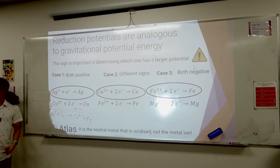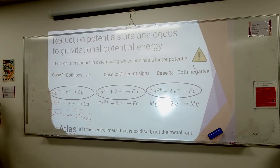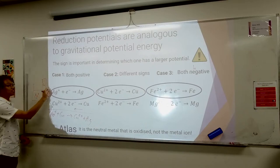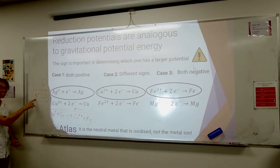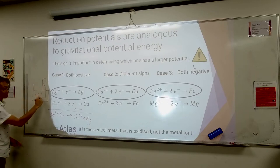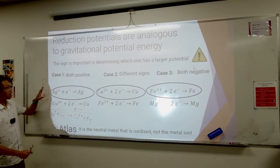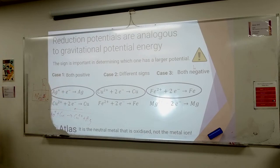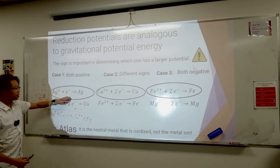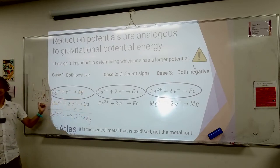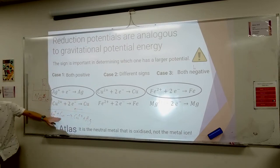They would actually react. This is just another way of thinking about the same displacements from before. If you have a solution of silver plus and you put in a chunk of copper metal, they will displace each other. Silver is good at reduction, copper metal is good at oxidizing. This is going to produce some silver metal deposit, some of the copper is going to break apart to form copper ions - they react with each other. Everything is written as a reduction half-equation on the data sheet, but when you bring two together, the one better at reduction proceeds forward and the one better at oxidation proceeds the other way.